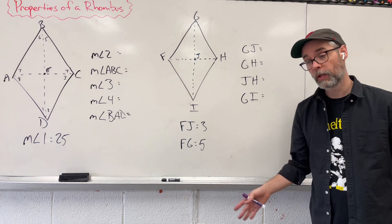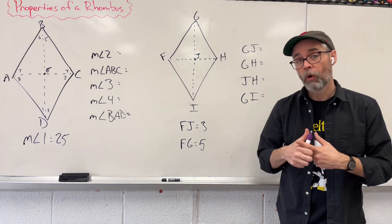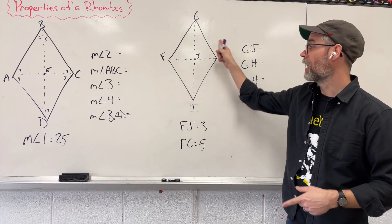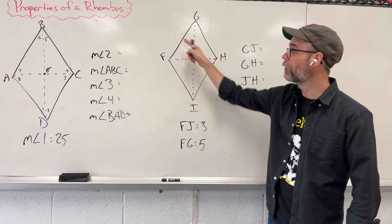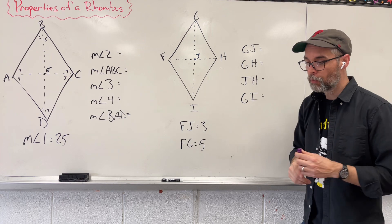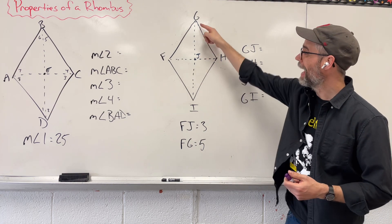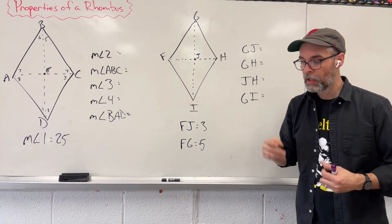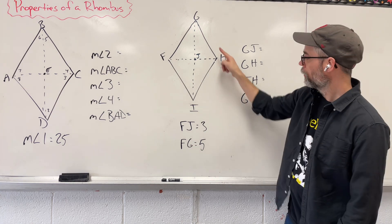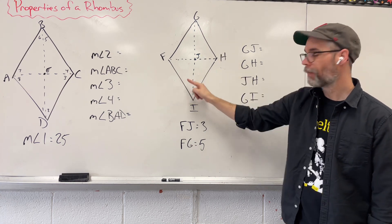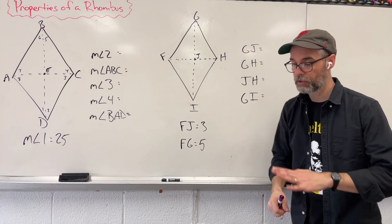But it shares all the other same properties of a parallelogram. What are those properties? We have opposite sides that are going to be both parallel to each other and congruent. We have opposite angles that are going to be congruent, and the two angles next to each other, consecutive angles, are going to be supplementary. They add up to 180 degrees.